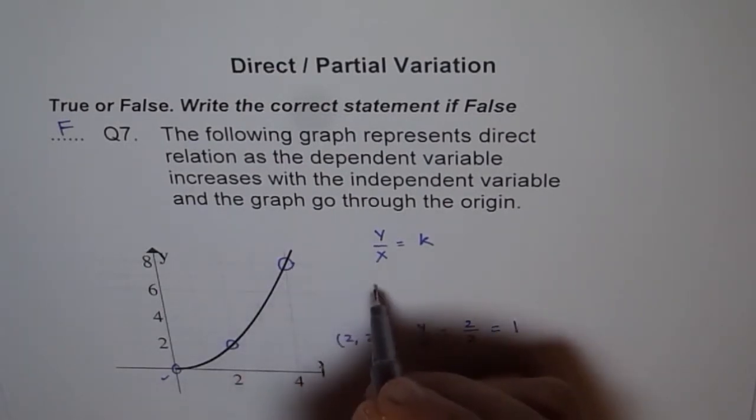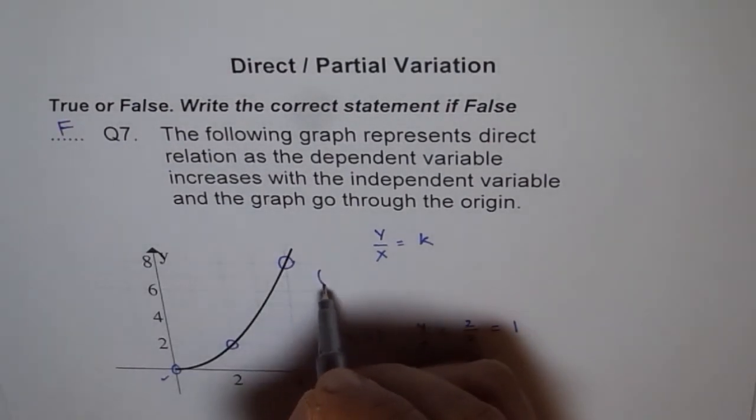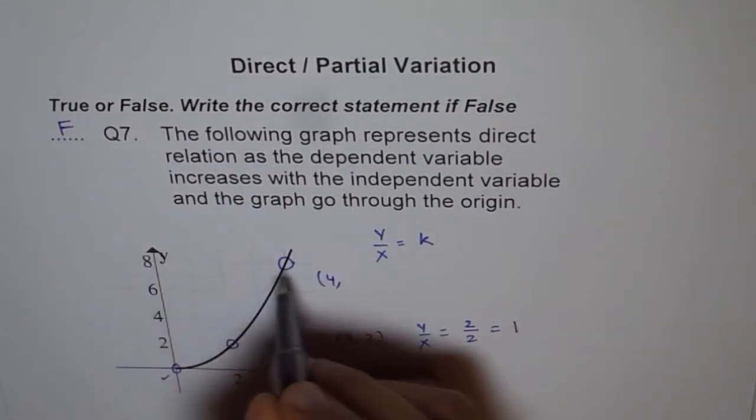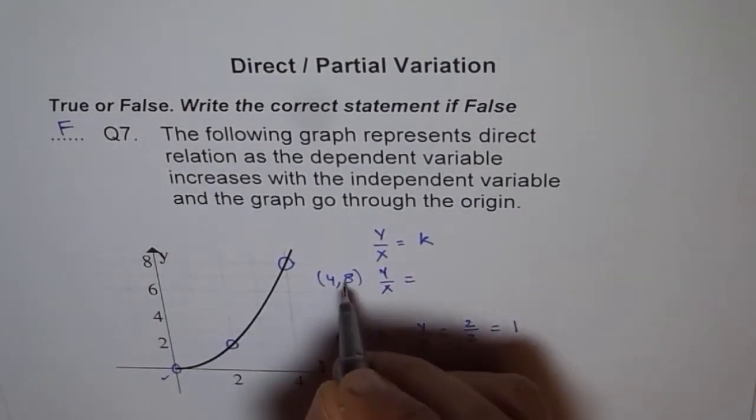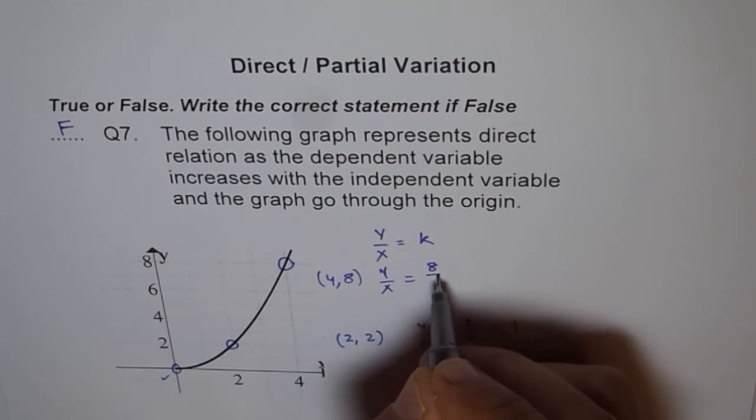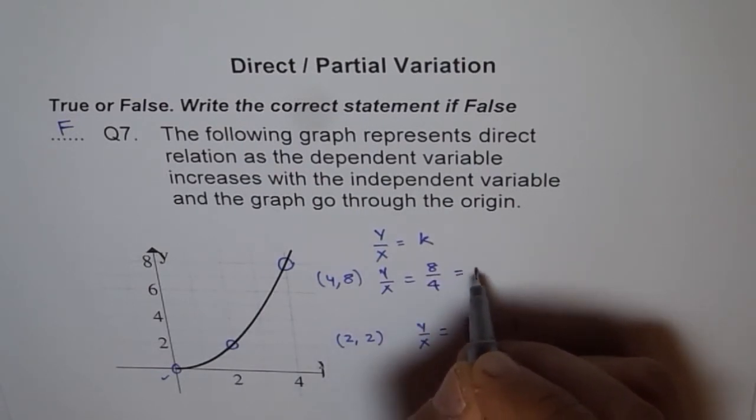X value is 4. So we have a point here which is 4, and y value is 8. Therefore, the ratio of y over x is 8 over 4.